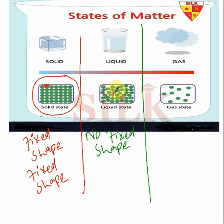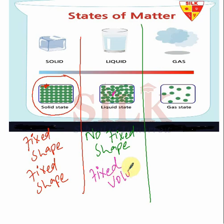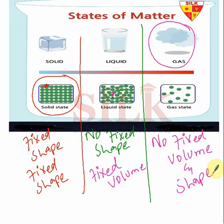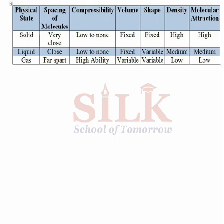For liquid, you can say the volume is fixed. Now we are moving towards the third state of matter. Here you can see a gas — a gaseous state — having no fixed volume and no fixed shape. The gas molecules have very large spaces between them, which is why the inter-molecular attraction is very low. This is why gas does not have a fixed shape or fixed volume.